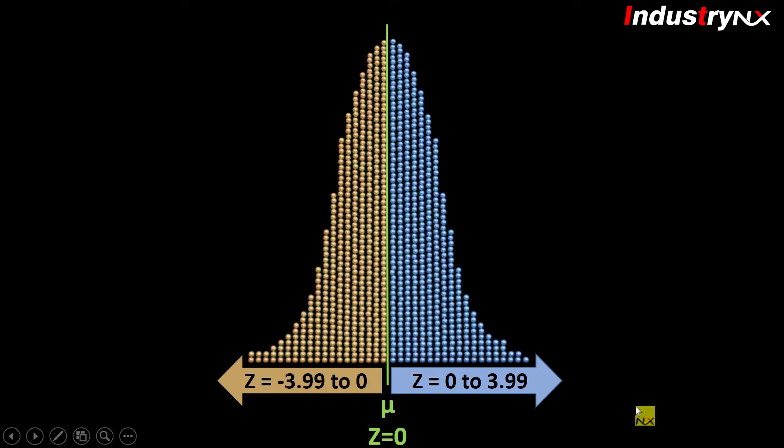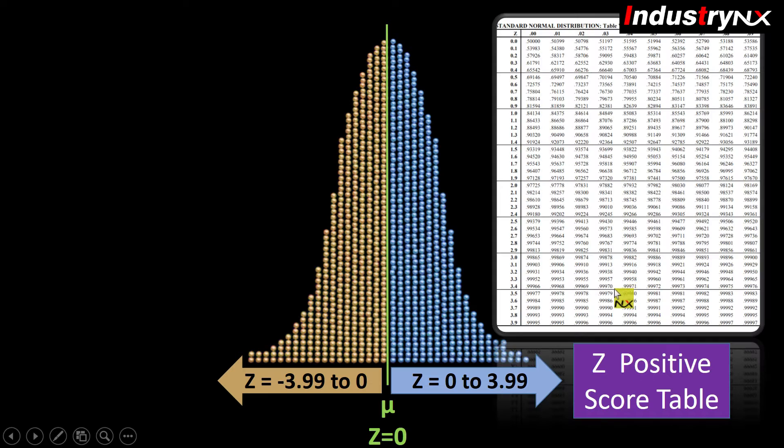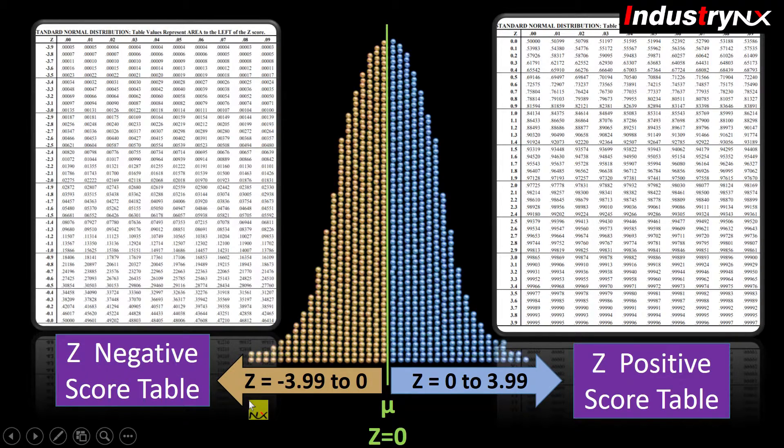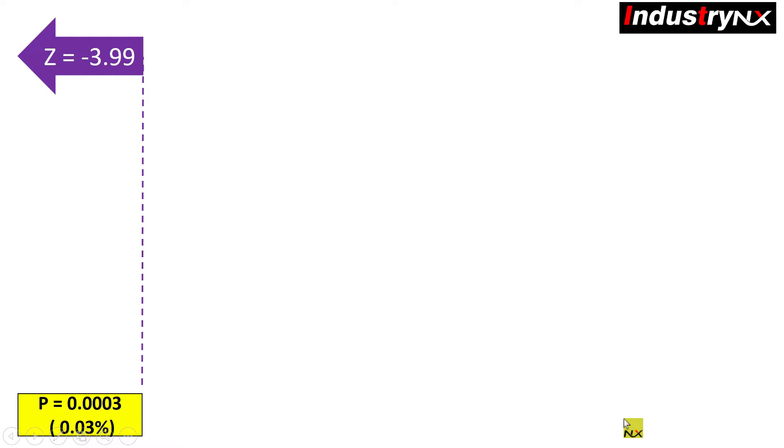To find p-value for such cases we need to refer two types of z-score tables: 1 is for z positive score and 1 is for z negative score. Both tables show the area to the left of given z-score, that is probability. Let us observe now how p-value is decreasing along with z-value decreases.